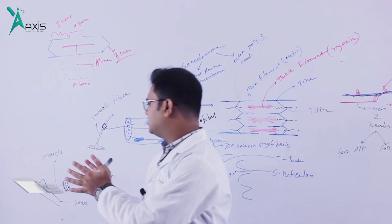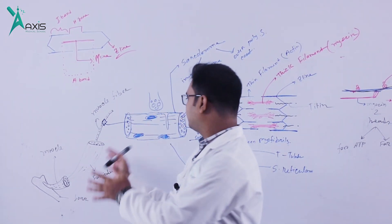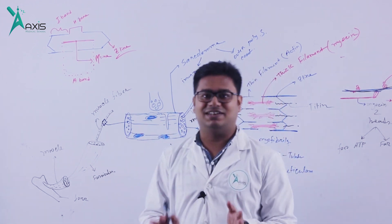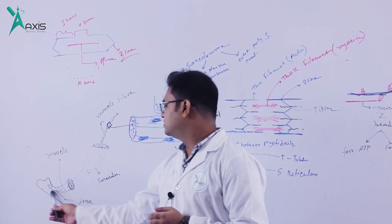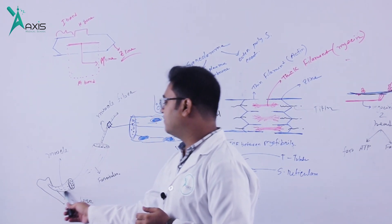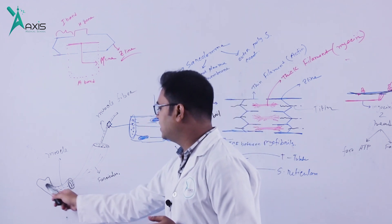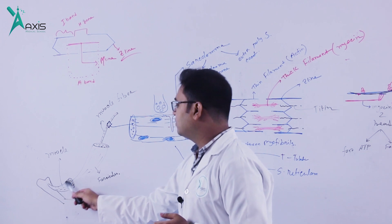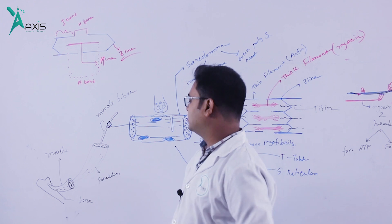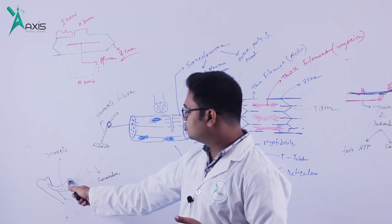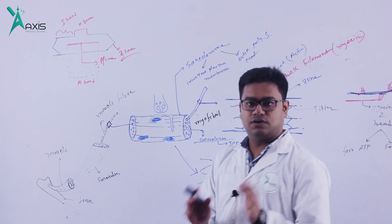We need to look at the normal structure. Looking at a figure, we see bones connected by muscle fibers. When we cross-section a muscle, we can see small dots — these are muscle fasciculi.